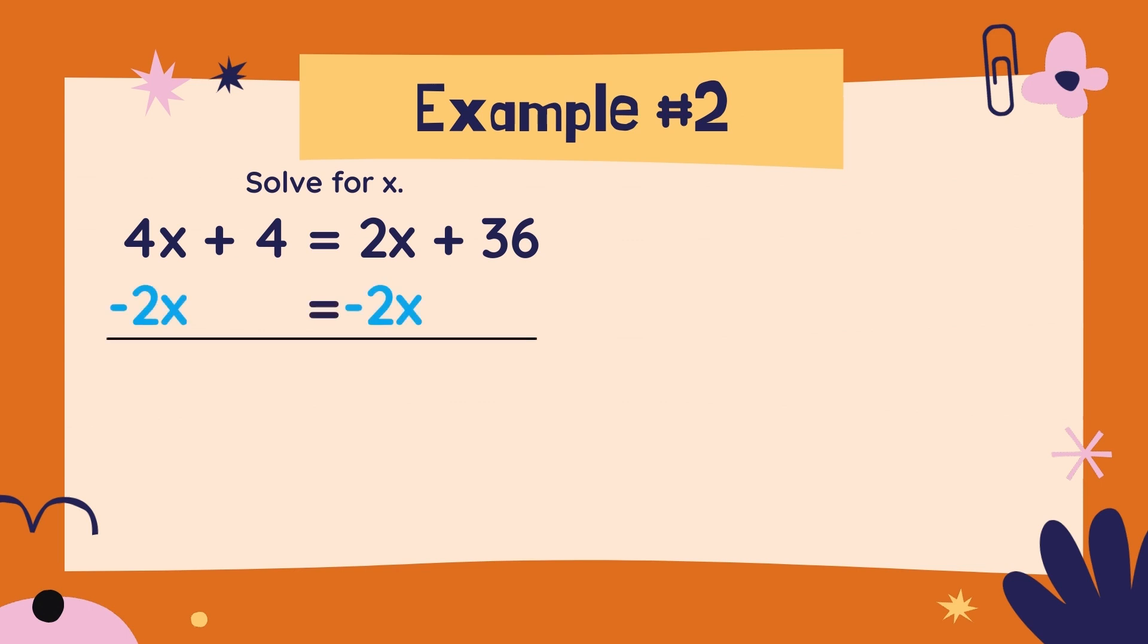The x's are all going to go over to the left side. Then we need to get that 4 out of the left side and move it over to the right side. So let's subtract 4 from both sides of the equation. That will eliminate the 4 on the left. 4x minus 2x is 2x, and 36 minus 4 is 32. Now we need to get the x completely by itself by dividing both sides by 2.